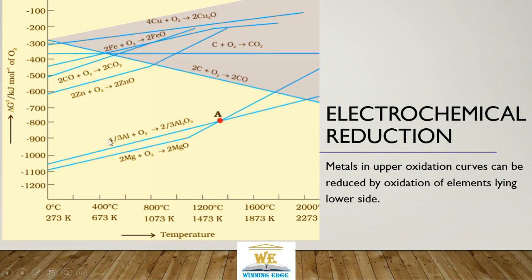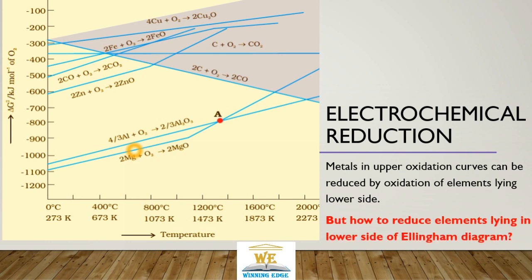But what about the elements lying on the lower side? So what about these elements - aluminum, zinc? We can reduce them at high temperatures. Like 1600 degrees Celsius, definitely carbon can be used for aluminum but the temperature is very high: 1600 plus. Magnesium oxide, 2000 plus degrees Celsius. It's not very practical. So how to reduce these elements - aluminum, magnesium?